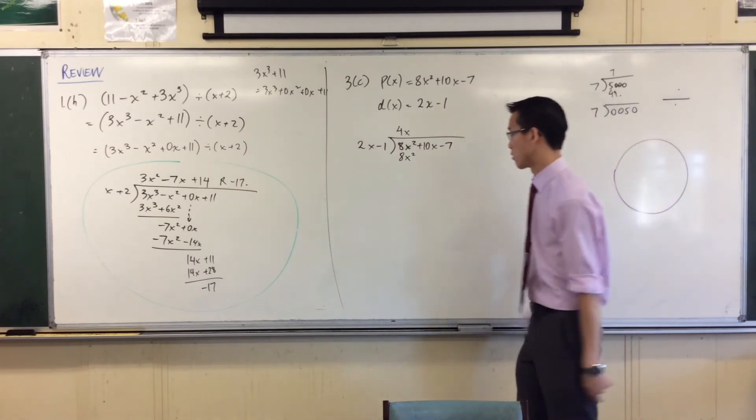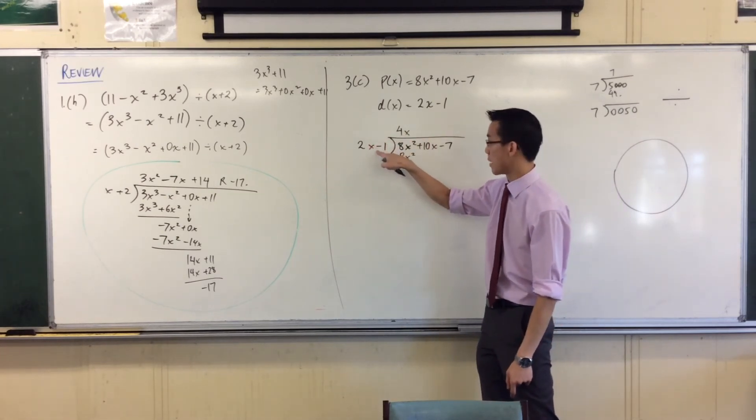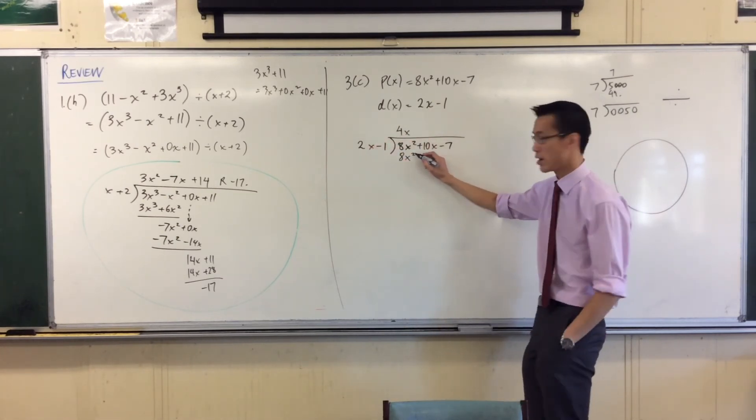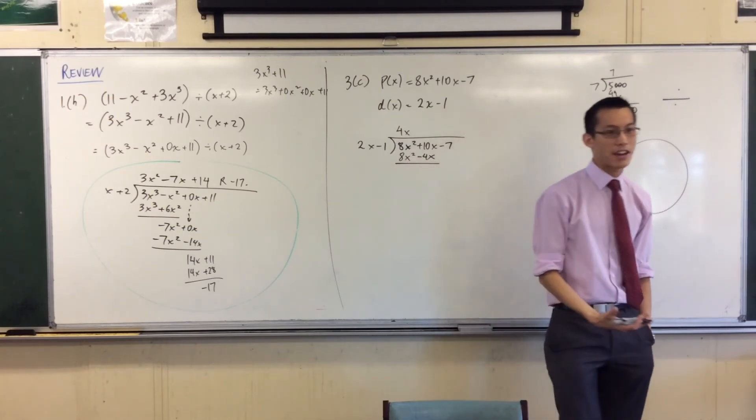If it's not the same, then I know I've chosen the wrong thing to go into my quotient. I need to multiply by this as well. So 4x times negative 1 is minus 4x. And doing my subtraction now. I do 10, take away negative 4.